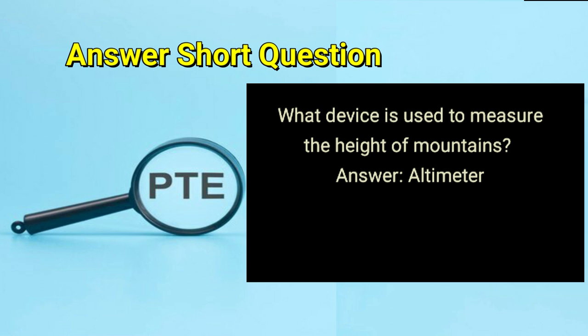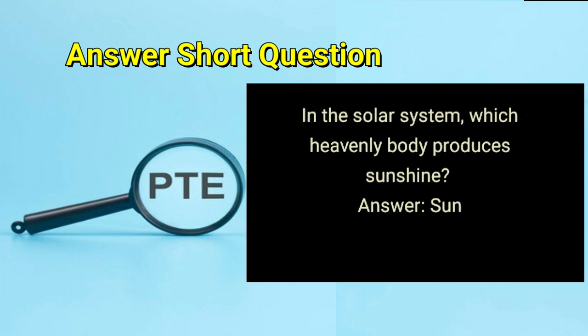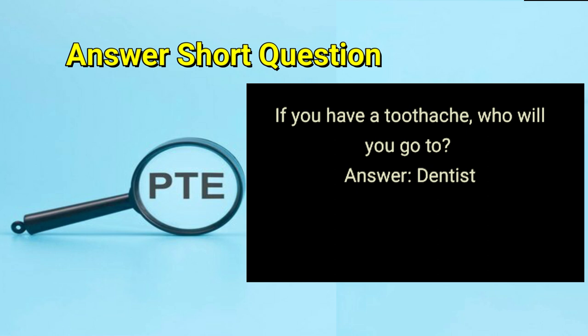What device is used to measure the height of mountains? Answer: altimeter. In the solar system, which heavenly body produces sunshine? Answer: sun. If you have a toothache, who will you go to? Answer: dentist.